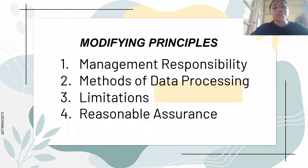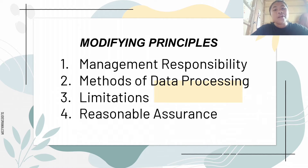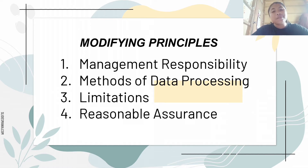Embedded in the internal control objectives are the modifying principles that govern designers and auditors of the internal control system. First, we have management responsibility, wherein management is responsible for establishing and maintaining the internal control system. To maintain effective internal controls, management should maintain adequate policies and procedures, communicate these policies and procedures, and monitor compliance with policies and practices. This principle is supported by the FCPA; however, Sarbanes-Oxley legislation makes it a law.